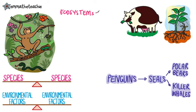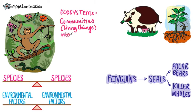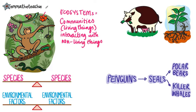Ecosystems are complex. They are made up of communities of living things interacting with each other and the non-living parts of their environment. Some examples of ecosystems include grassland, desert and tropical rainforest.